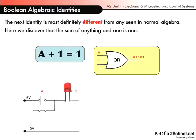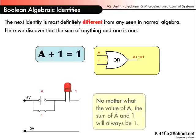Again, if you look at the circuit diagram, if this lower switch is closed, it does not matter what A is at all. It will always light the LED, or in other words, it will always be a 1 at the output. No matter what the value of A, the sum of A and 1 will always be 1. So that's our second identity.